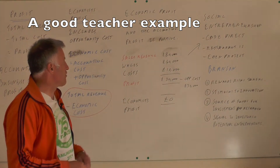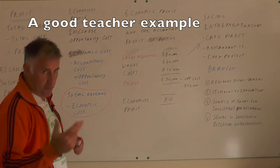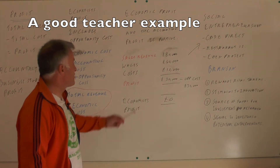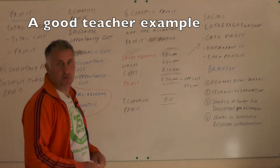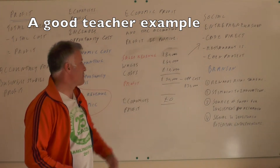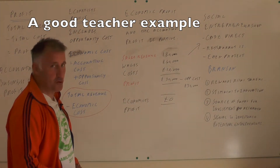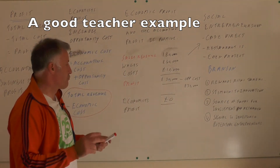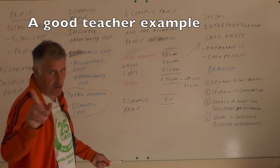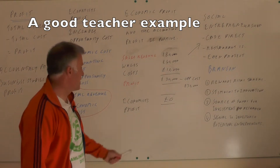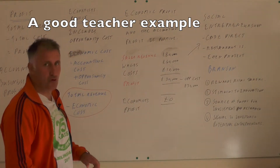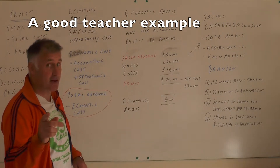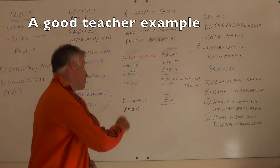The economic profit might be zero while the accounting profit could be positive. For example, if I run my own tutorial business, my sales revenue is £80,000 a year. I pay £40,000 in wages per year, costs of £10,000, and therefore my accounting profit is £30,000. However, if I've given up a job paying £30,000, my economist profit is £0. So accounting profit is always bigger than economist profit.